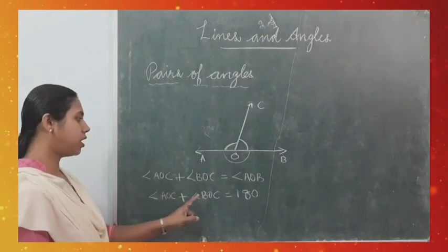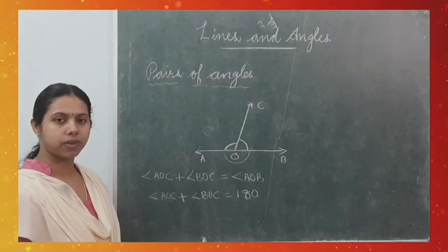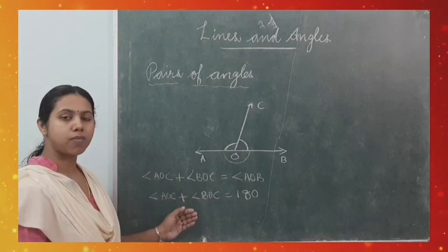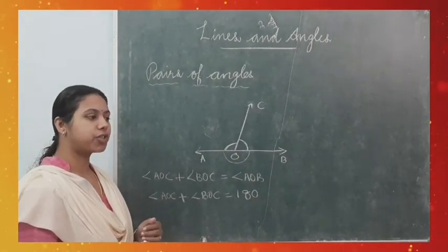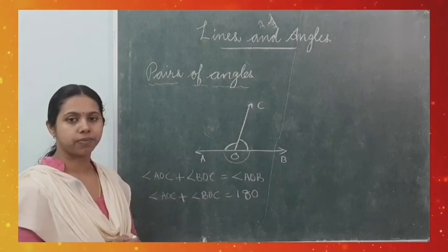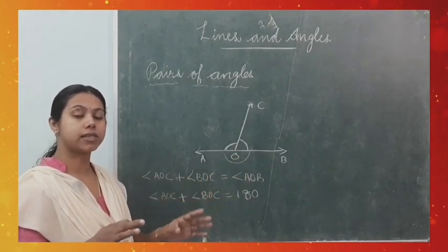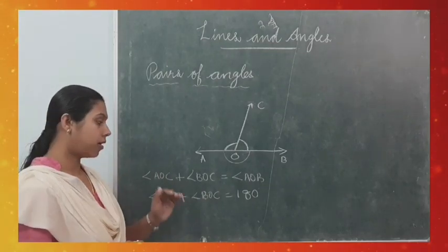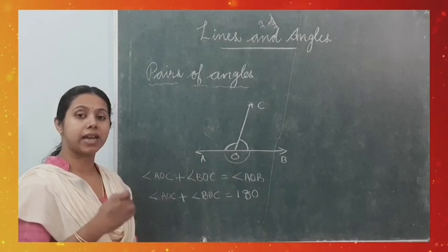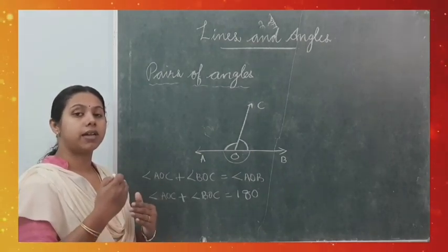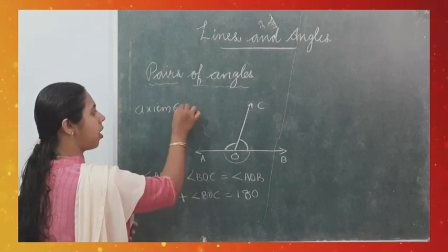From this, we can state an axiom: if a ray stands on a line, then the sum of the two adjacent angles formed is 180°. Axioms are assumptions which are obvious universal truths — they are not proved. We know that a straight angle is always 180°; that is the universal truth. So this statement is known as Axiom 6.1.